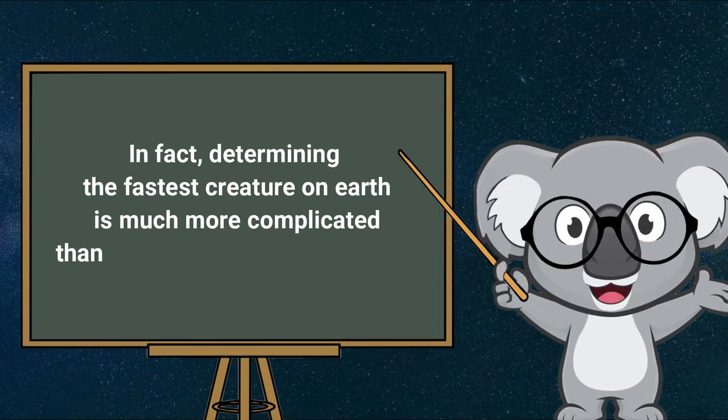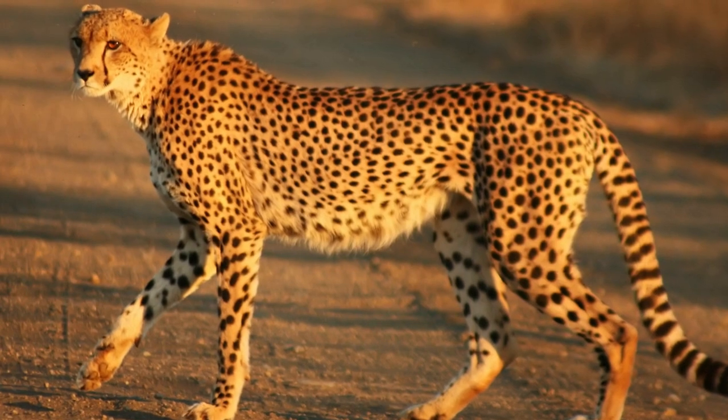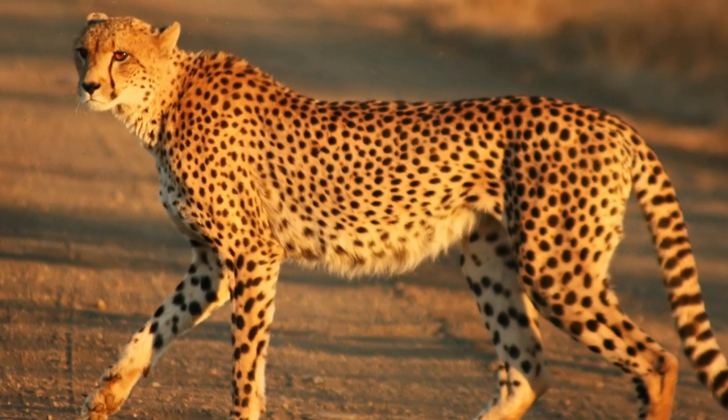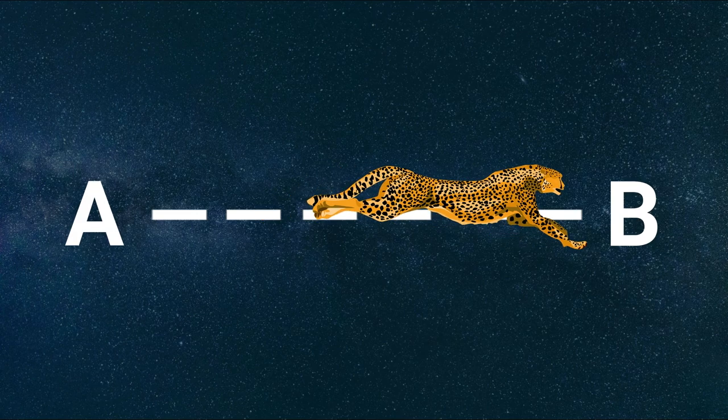In fact, determining the fastest creature on earth is much more complicated than we've all been led to believe. For instance, cheetahs are only the fastest animal if you restrict your search to land animals running from point A to point B.